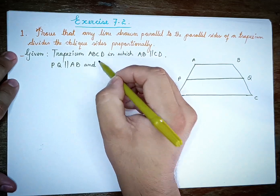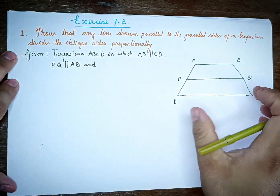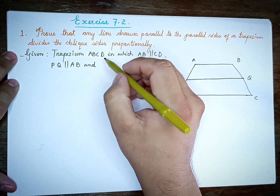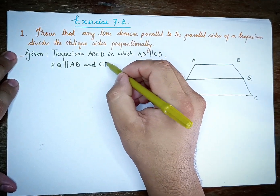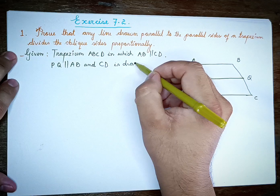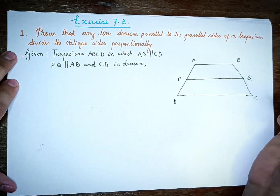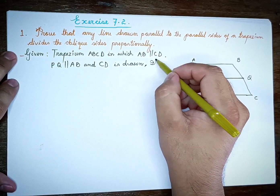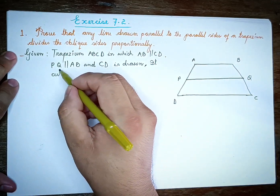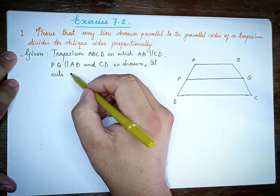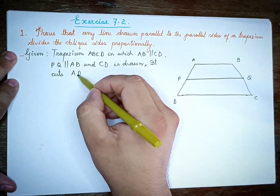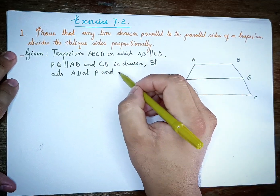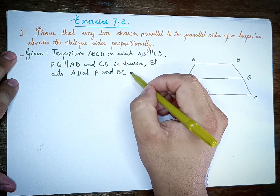So here we go. This is PQ, parallel to AB and CD is drawn, so we can see this one. This is PQ parallel to AB and CD is drawn.